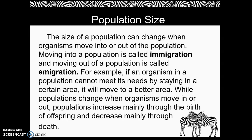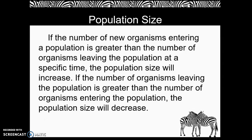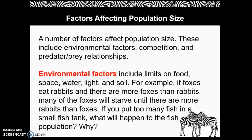While populations change when organisms move in or out, populations increase mainly through the birth of offspring and decrease mainly through death. If the number of organisms entering a population is greater than the number leaving at a specific time, the population size will increase. If the number leaving is greater than the number entering, the population size will decrease.